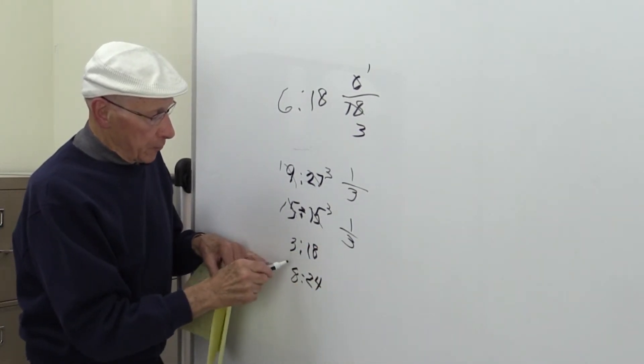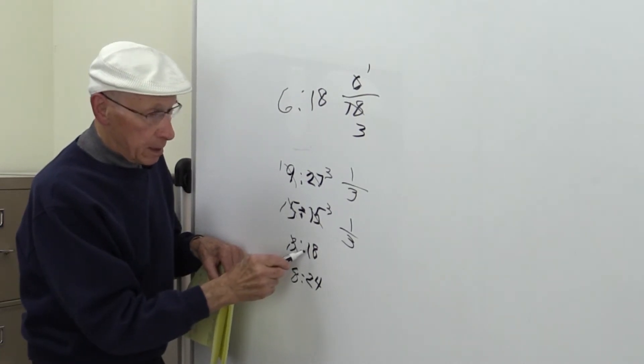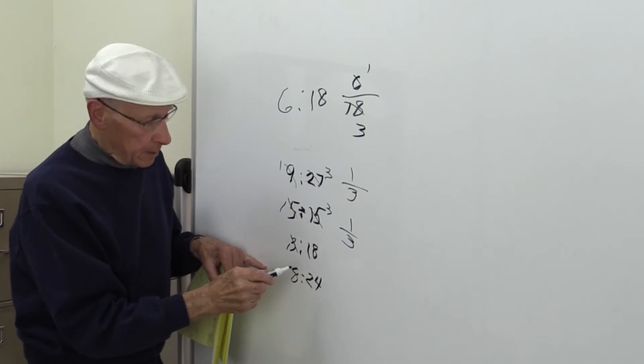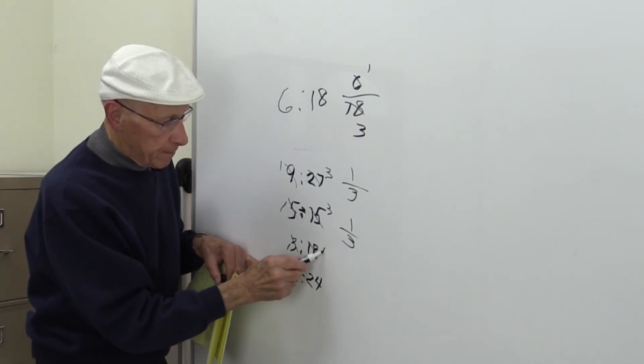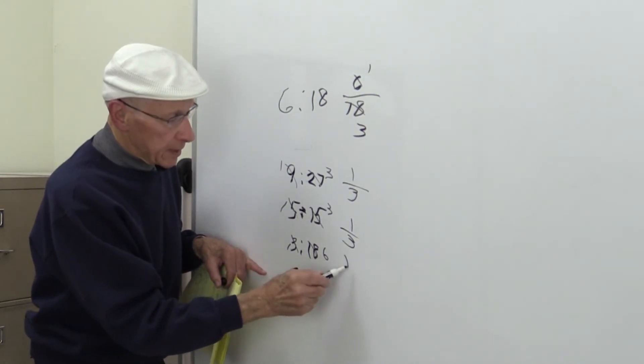Now, 3 goes into 3 one time. 3 goes into 18 how many times? 6. 1 sixth.